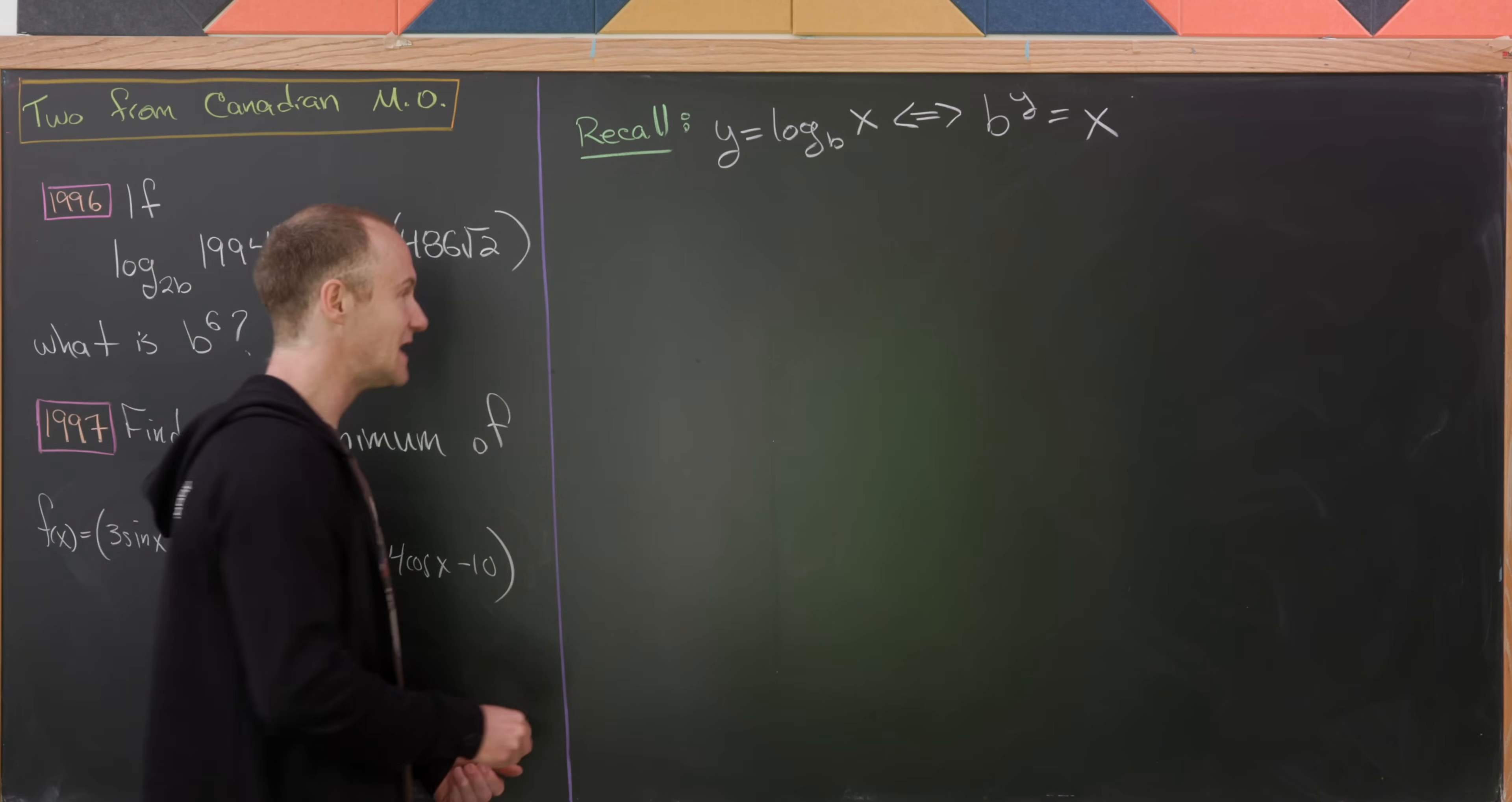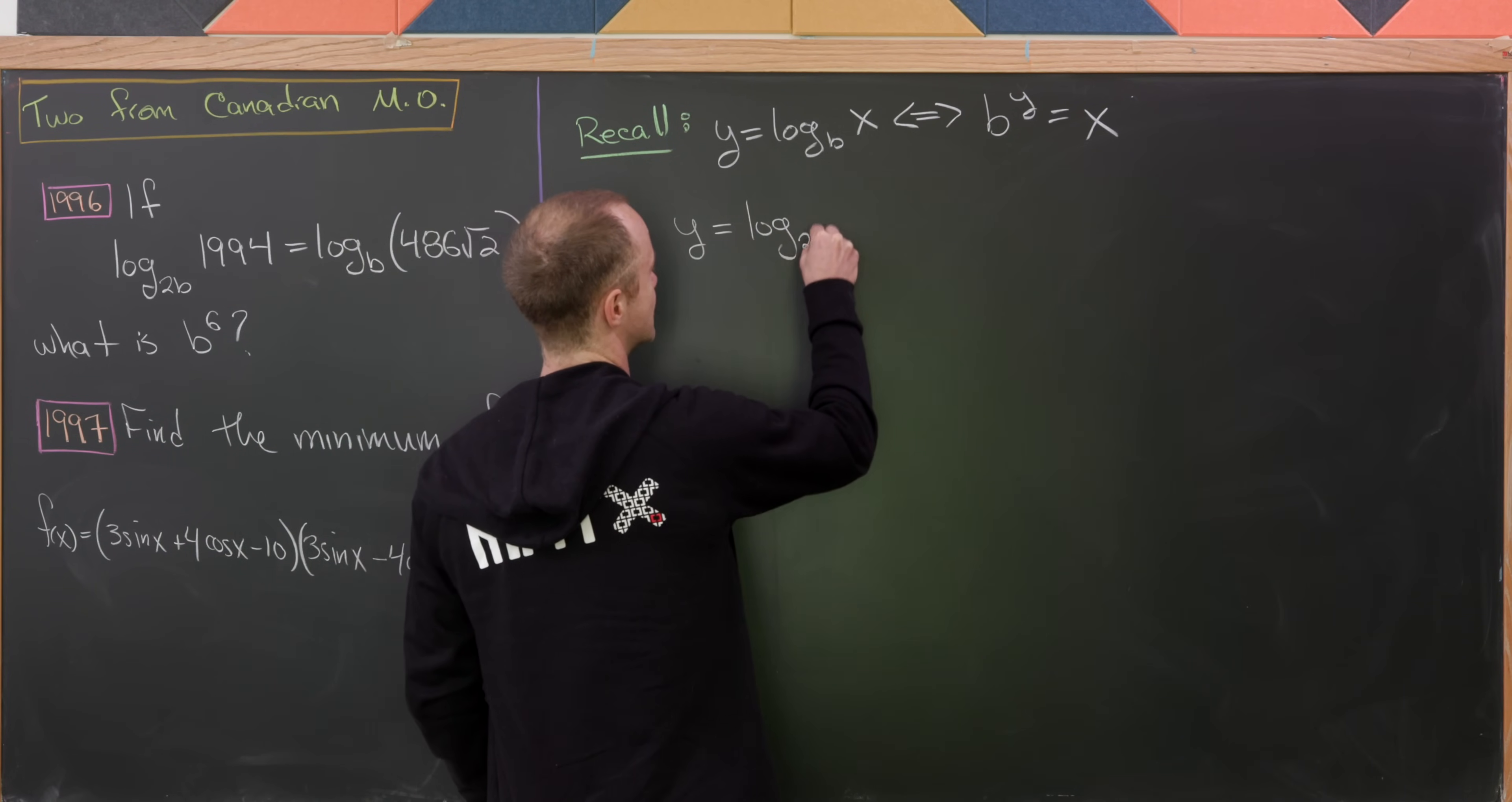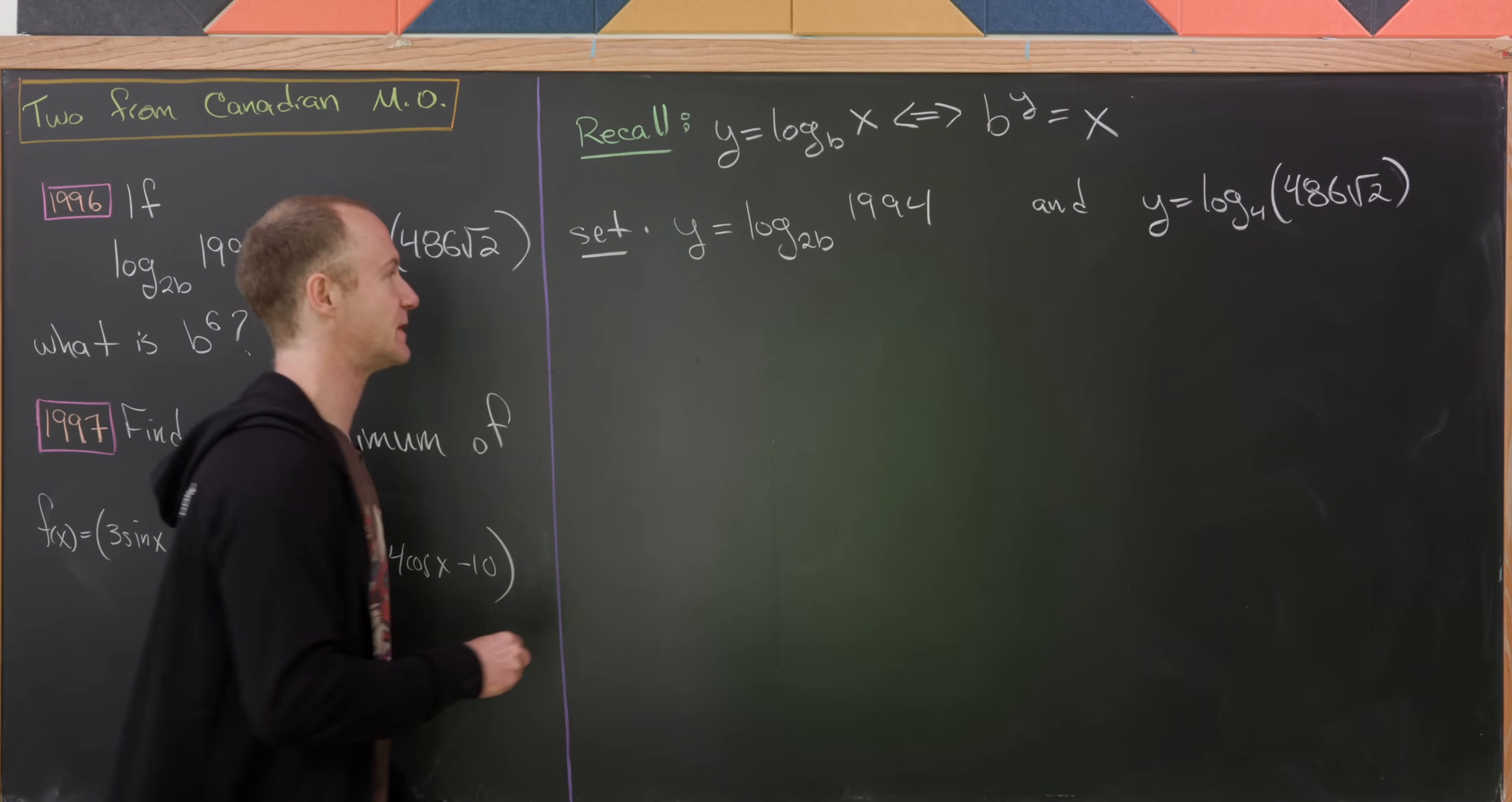So keeping that in mind, let's set y equal to each of these logarithms separately. And then we'll have some sort of nice equation that we can hopefully solve for y. So we've got y equals the log base 2b of 1994. And then we have y equals the log base b of 486 times the square root of 2. Now we'll transport each of these to their exponential versions.